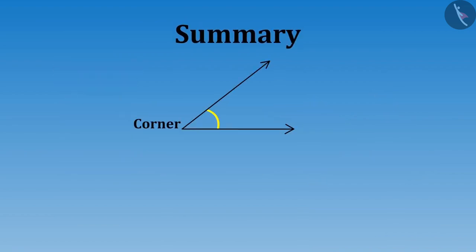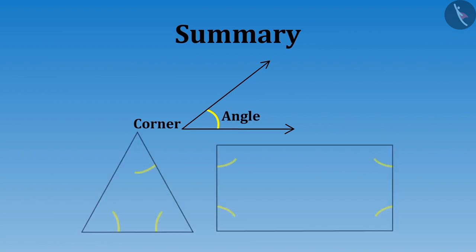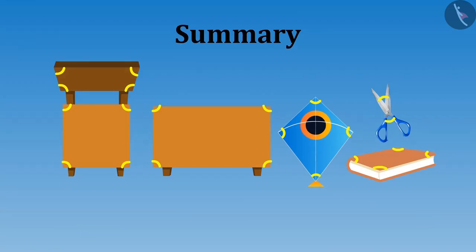In this video, we have learned about corners, angles formed in them and the angles formed in close figures. Did you observe that the angles in figures identified by Meena and Riva are closed figures, just like this triangle and rectangle?